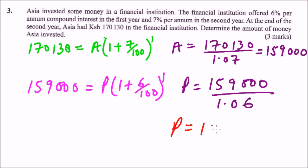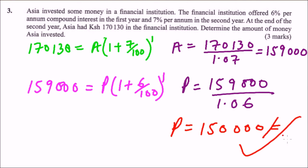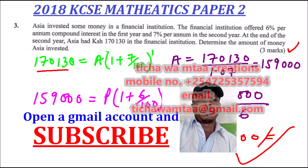That is the amount ASIA had invested in the bank, or the institution, for him to get 170,130 at the end of the second year. And that is how you work it out — you earn yourself 3 marks. Thank you.